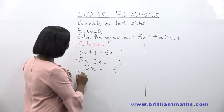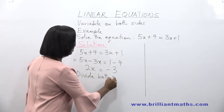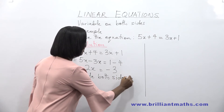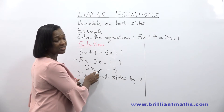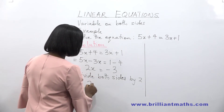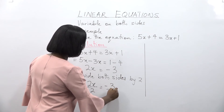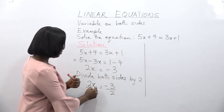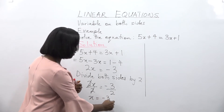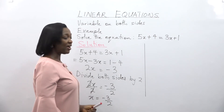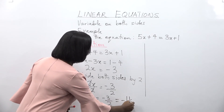So divide both sides by 2 to find the value of x. We can find that x is equal to minus 3 over 2. The value of x is actually minus 1 and a half.